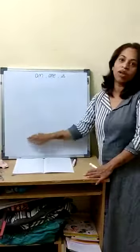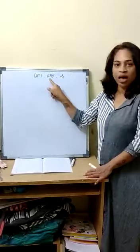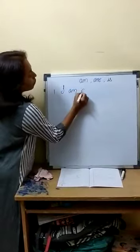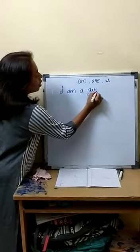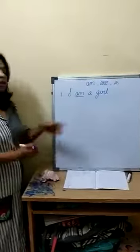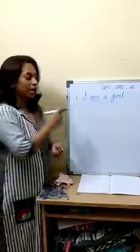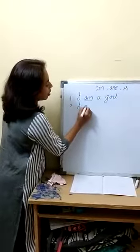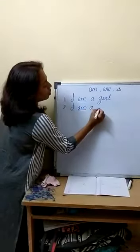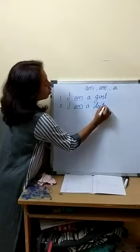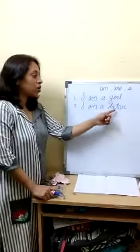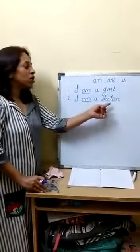Today also we will see some more examples where we use am, where we use are, and where we use is. The first example for am is: I am a girl. I am a doctor. I am telling about my profession — I am a doctor.